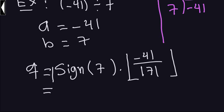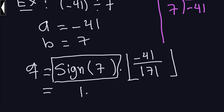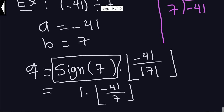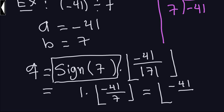So let's look at the sign of 7. Because 7 is positive, that's 1. And the absolute value of 7 is, of course, 7. So basically what I have here is 1 multiplied by negative 41 divided by 7. And 1 multiplied by anything is exactly the same number.